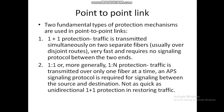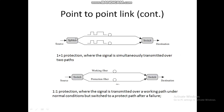First one is point to point link. In case of point to point link, two fundamental types of protection mechanism are used. The first one is called 1+1 protection. In case of 1+1 protection, traffic is transmitted simultaneously on two separate fibers. As you can see, data is transmitted separately over two paths.